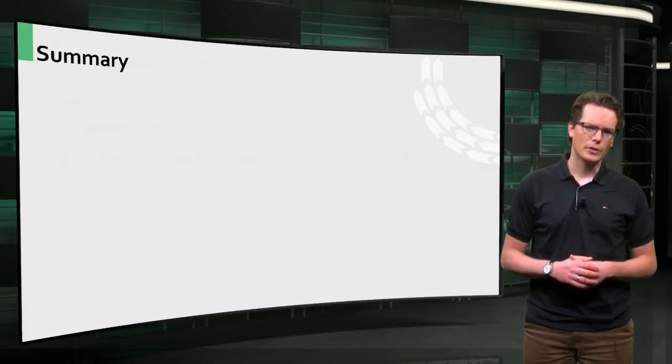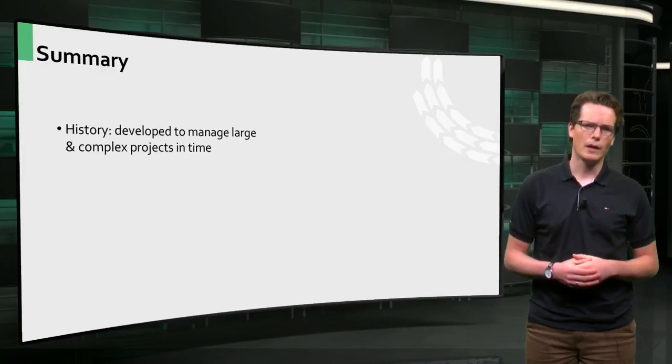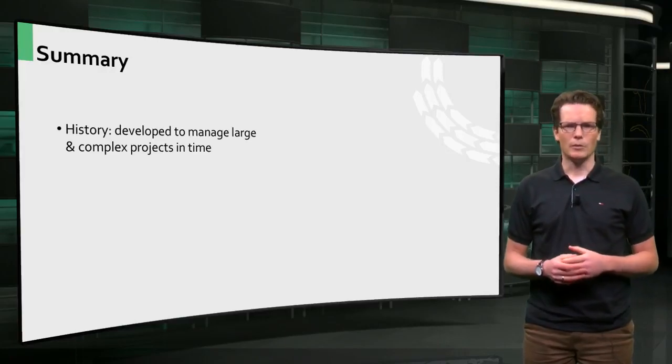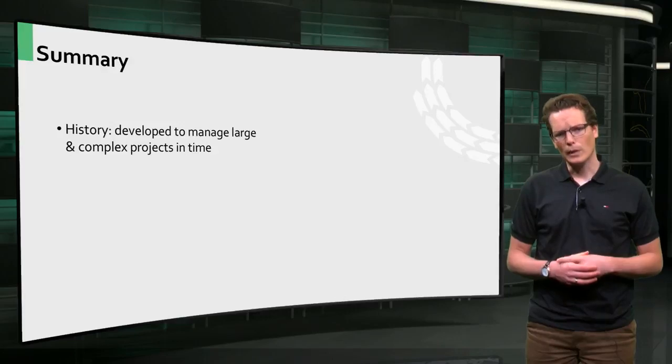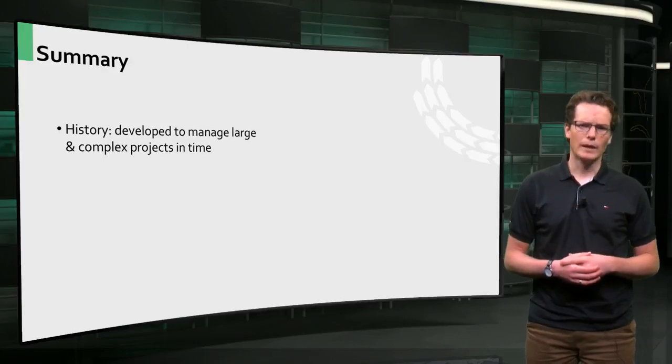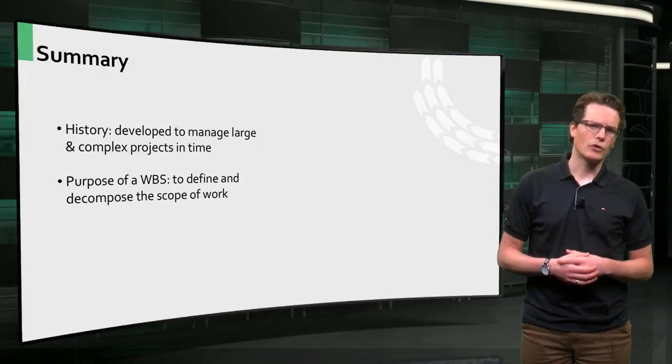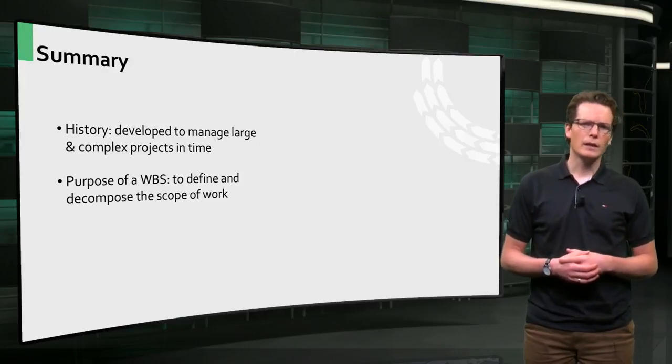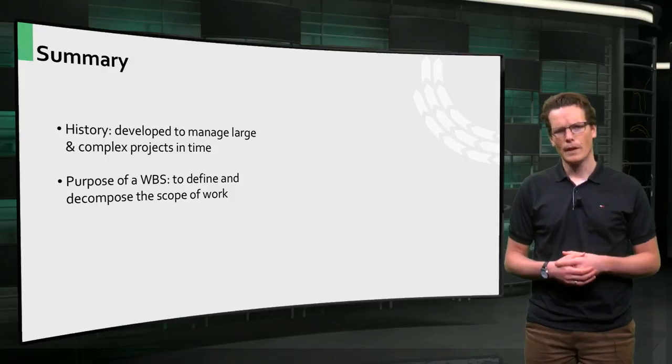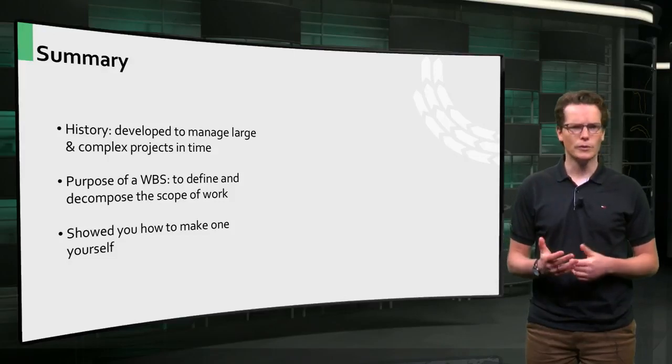This brings me to the end of this presentation. I have told you about the history of the work breakdown method and that it was developed to manage large and complex projects in time by planning the activities using a PERT network diagram. Also, I explained the purpose, tree structure and elements of the work breakdown structure aimed at defining and decomposing the scope of work. And I have shown you how you can make one yourself by asking some crucial questions. I hope you enjoyed it.